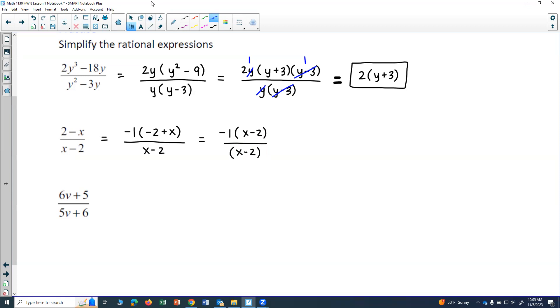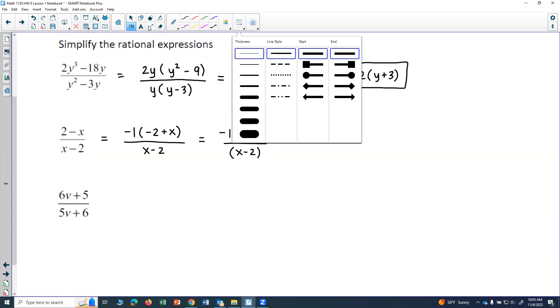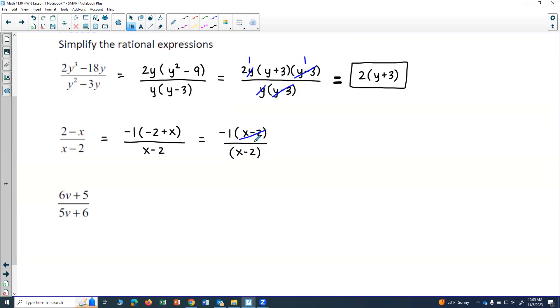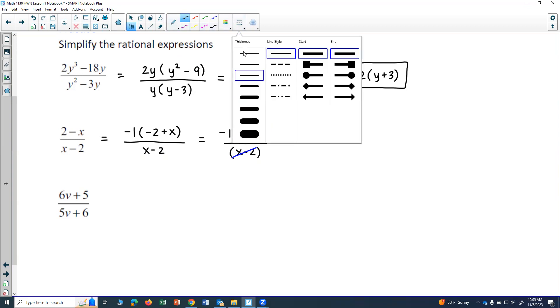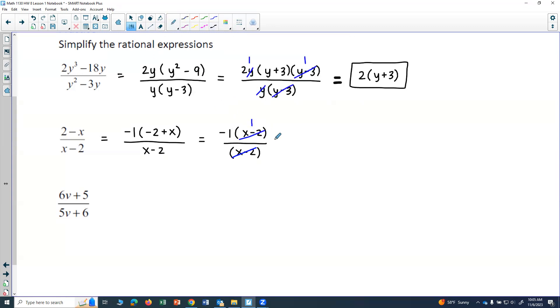And so those would actually cancel. And so if I look at the x minus 2 over x minus 2, those cancel and leave me with a 1 up here. And then I have negative 1 times 1, which would just give me a negative 1. So the simplified rational expression here is just a negative 1.